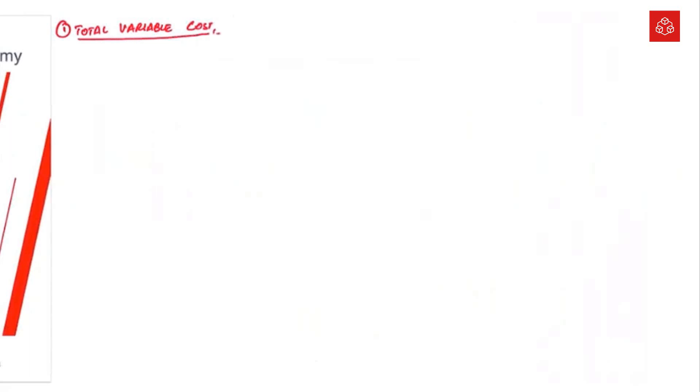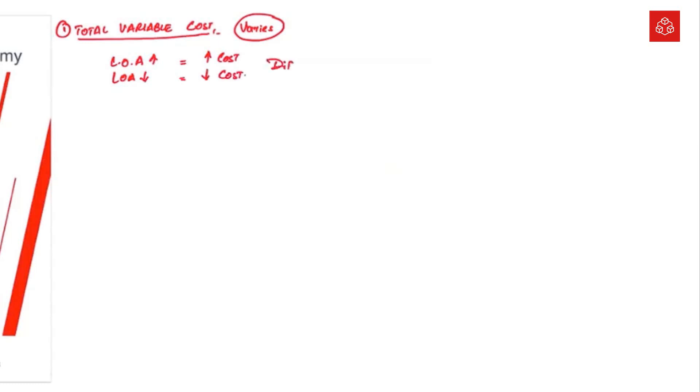Number one: total variable cost. With the name it's very clear that this is the cost which basically varies. Whenever the level of activity changes, total variable cost also changes. When the level of activity increases, total variable cost also increases. When the level of activity decreases, total variable cost also decreases — in direct proportion to the level of activity.